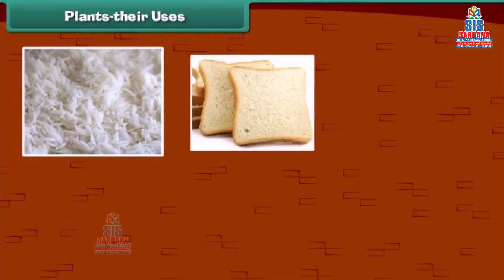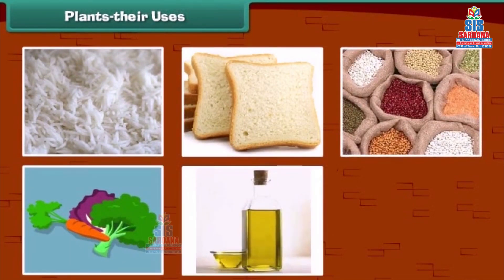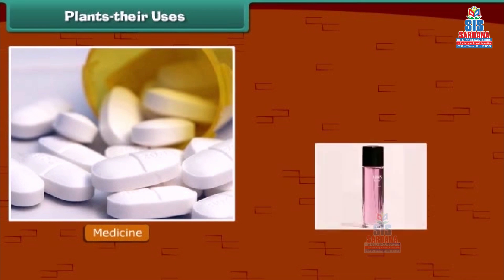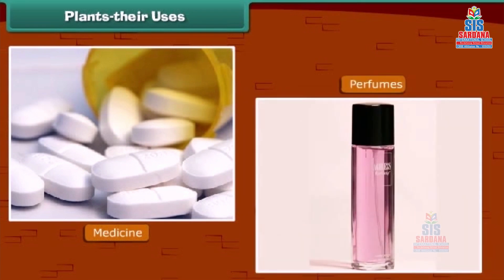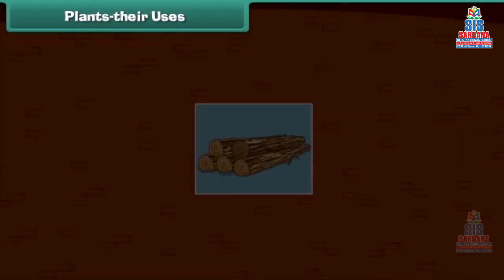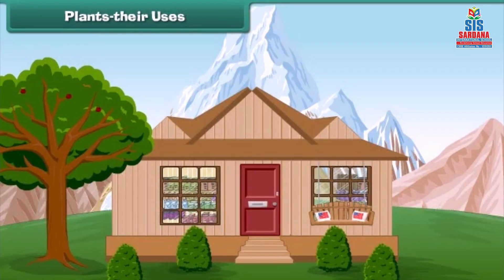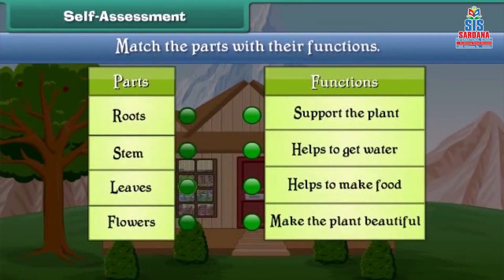Kids, as we know, we get our food items from the plants. Besides food items, we also get many other things from plants. Many medicines and perfumes are made from plants. Plants also give us wood. In some places, houses are made up of wood. Friends, now let's check your understanding. Match the parts of plants with their functions.